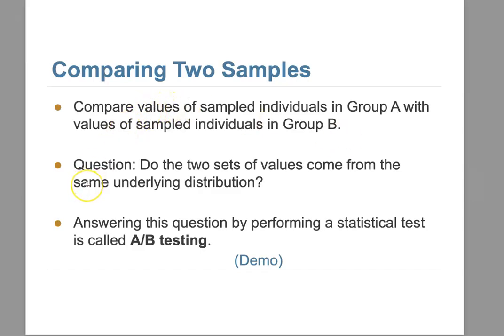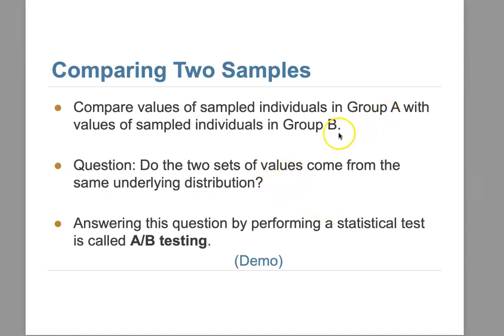In order to answer this question, we need to perform statistical testing — that's what we call A/B testing. We have a population, and from this population we get two groups of data that show some differences. Our null hypothesis is that the two groups came from the same distribution. The alternative is that there is a real difference between the two groups. Just like before, we simulate under the null hypothesis and compare the results.